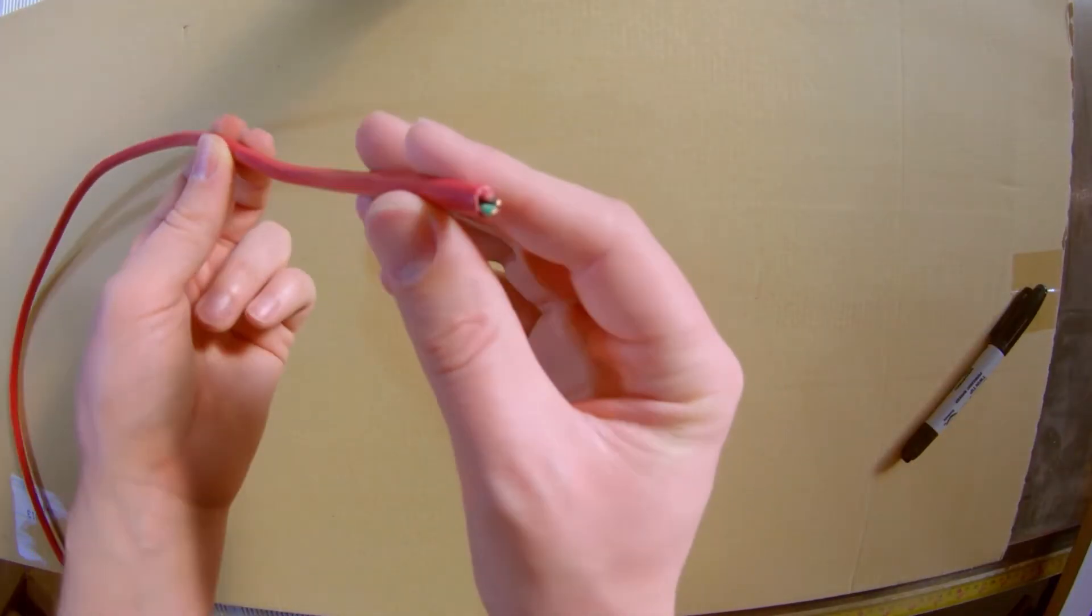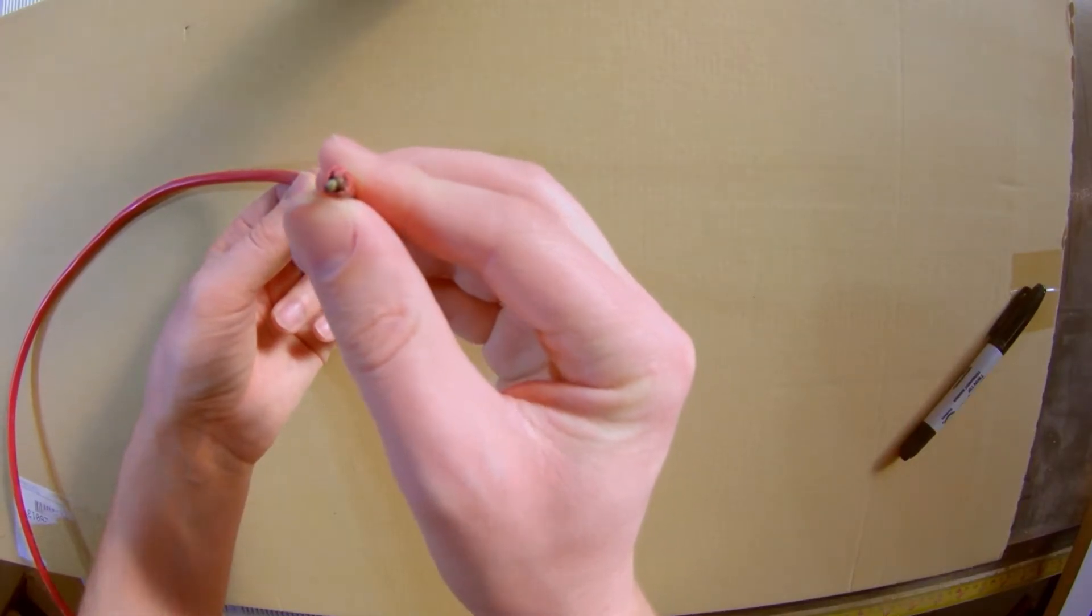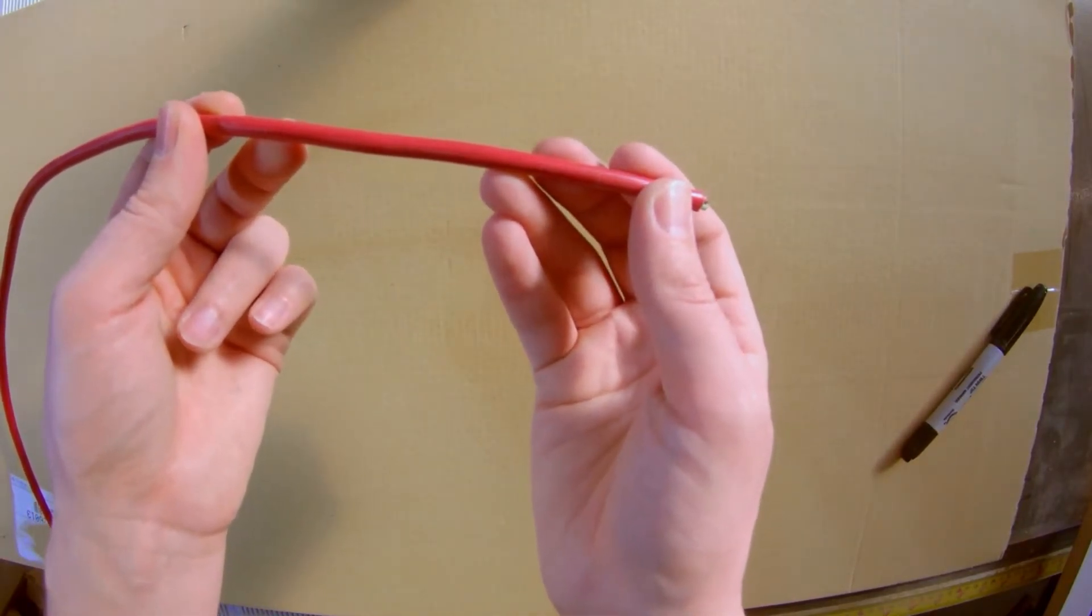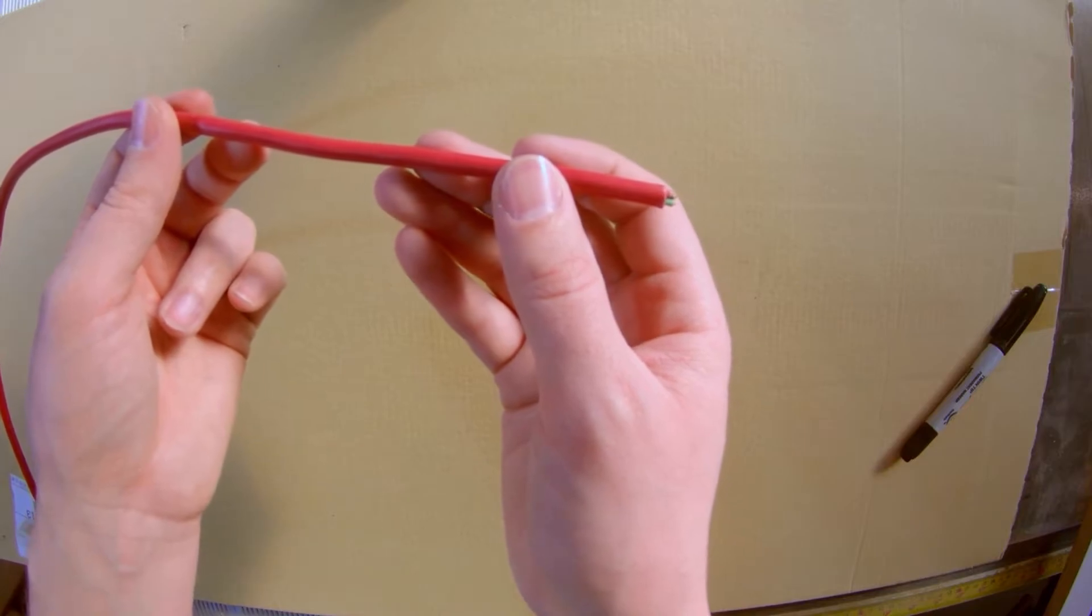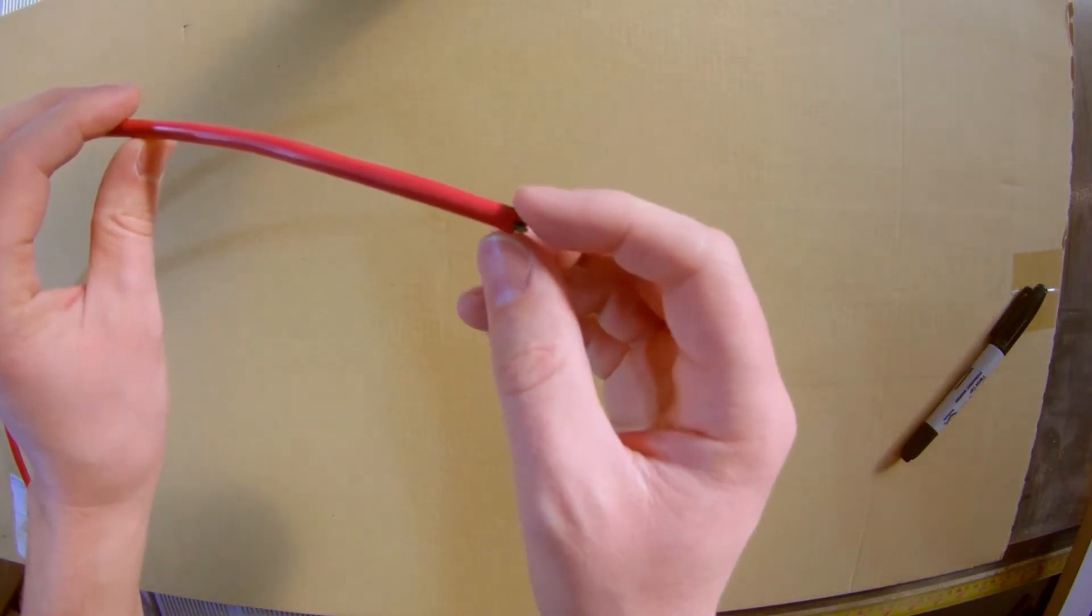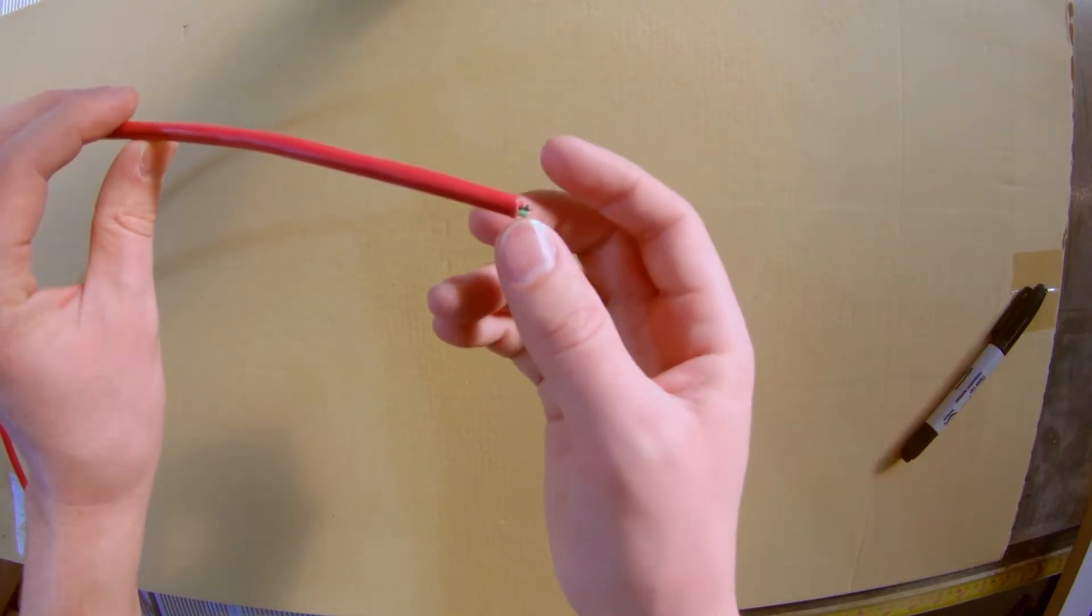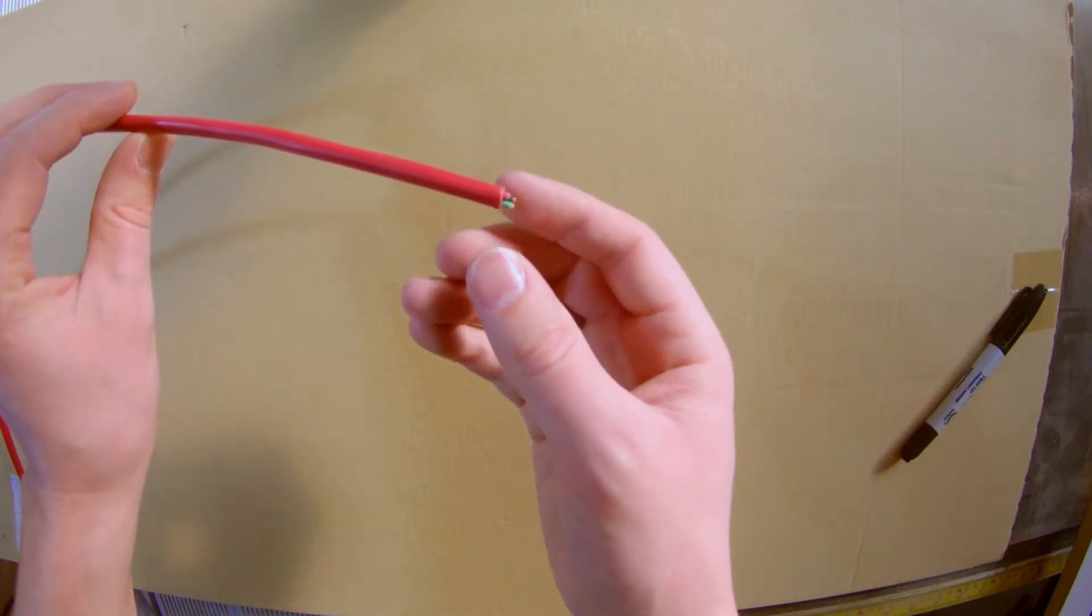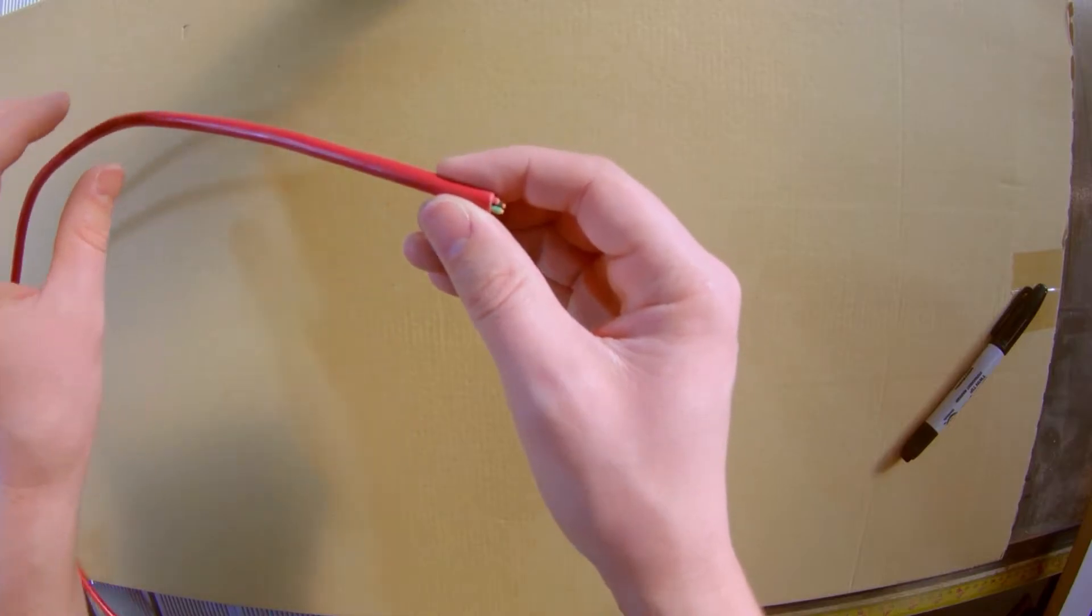So to wire this in, you're going to need some three conductor 18 gauge wire. This is low voltage wire. So the electrical guys usually aren't too worried about this. This typically falls under your mechanical inspection for your furnace and that sort of thing.